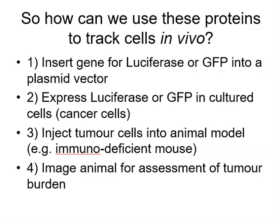Now that we've learned about GFP and luciferase, we can look at how these are used in in vivo experiments — specifically tracking tumours within mice. Tumour cells expressing GFP or luciferase are implanted into mice. The procedure involves: inserting the gene for luciferase or GFP into a plasmid vector; expressing it in cultured cancer cells; injecting those cells into a suitable immunodeficient animal model; and imaging the animal using one of two imaging modalities.